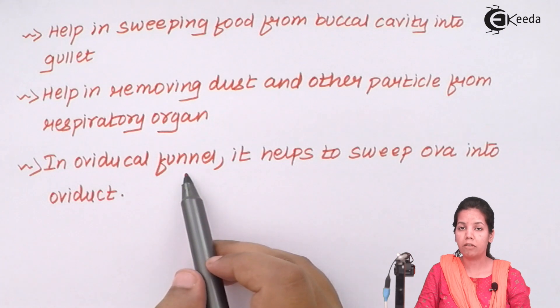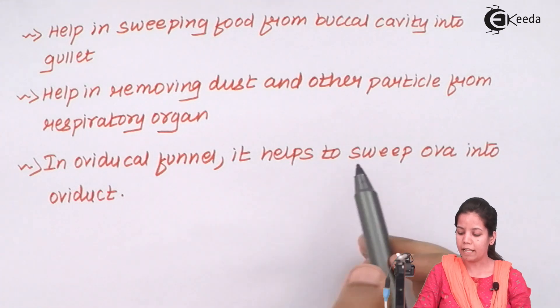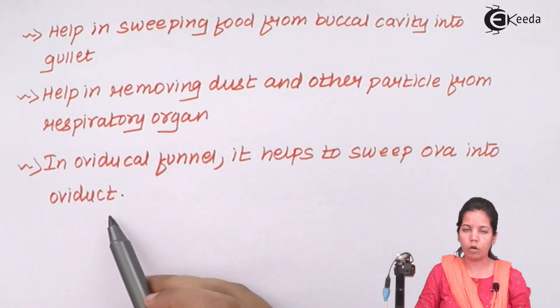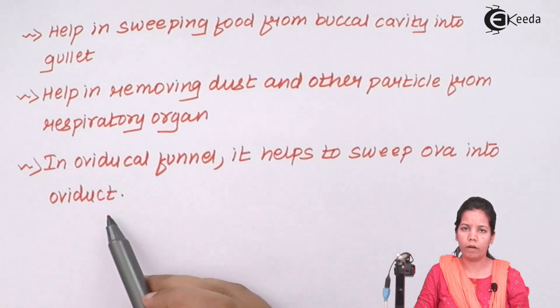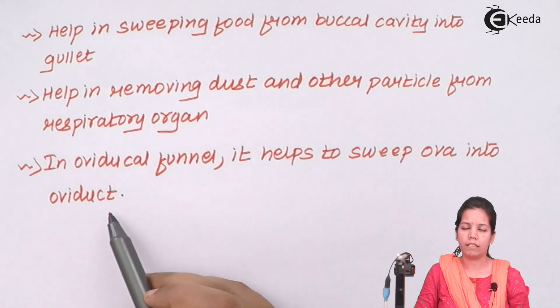In the oviduct present in the female reproductive tract, ciliated epithelium helps to sweep ova into the oviduct or push down ova during the process of egg formation or fertilization.